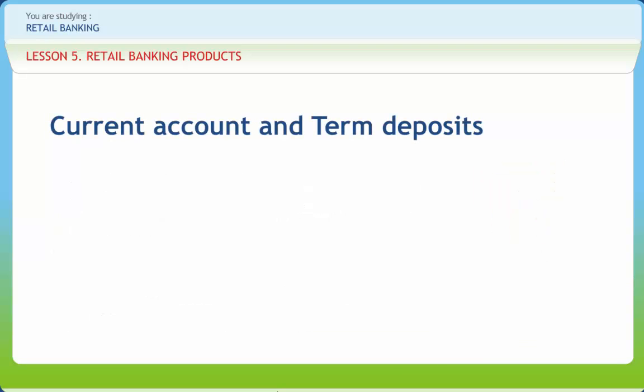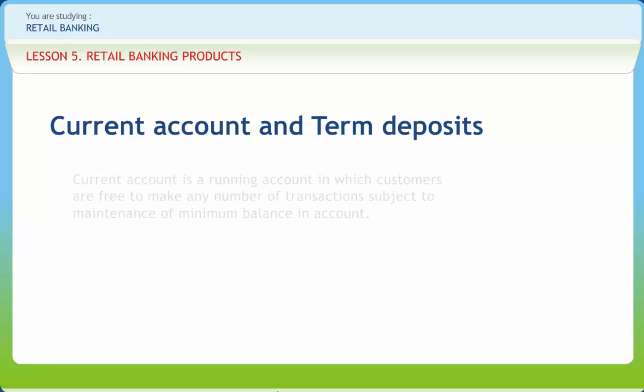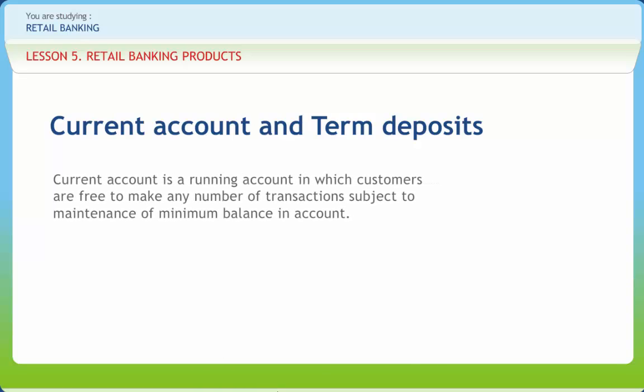A current account may be opened by individuals singly or jointly, partnership firm, company, association, institution, trust, society, etc. According to the Indian Bank's Association model deposit policy, an illiterate or blind person cannot open a current account. Minors in their own name can also not open a current account as per the current practice of the banks. It is a running account in which customers are free to make any number of transactions, subject to maintenance of minimum balance in the account. The target group of current account is the business segment.